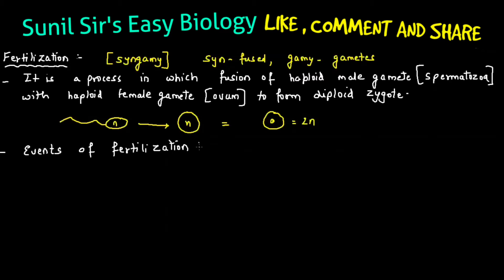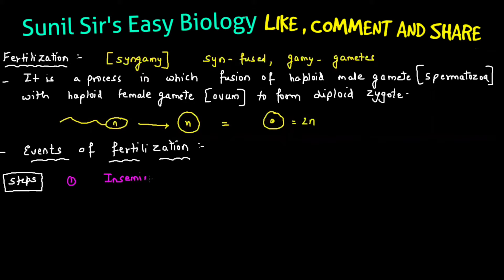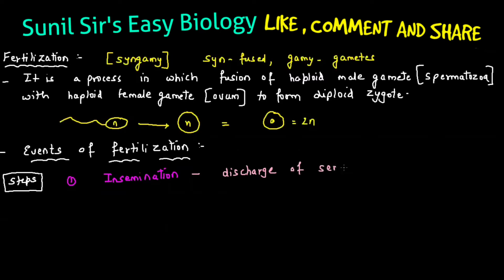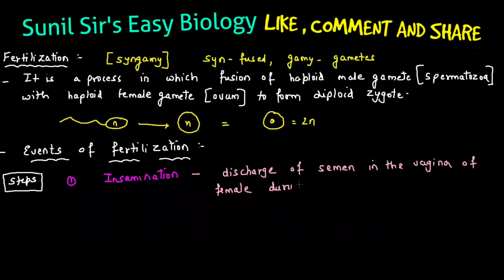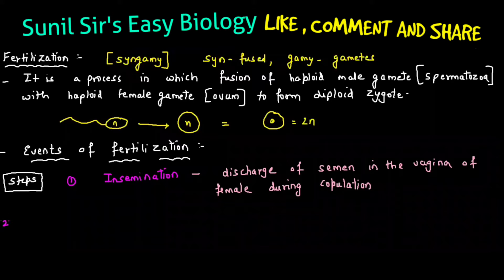In fertilization there are different events taking place — it is not a one-step process. The first step involved in fertilization is insemination. Insemination means that during mating, the discharge of semen in the vagina of the female during copulation or coitus is known as insemination. This is the first event.